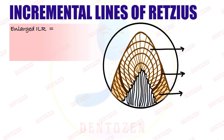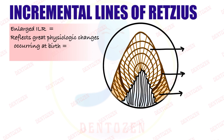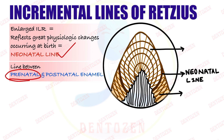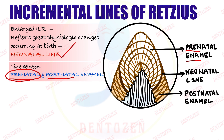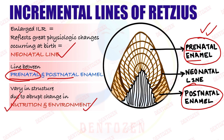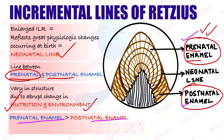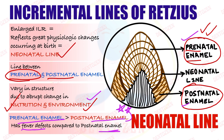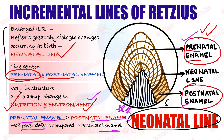Another enlarged incremental line is the neonatal line, seen when there is a great physiological change at birth. Some enamel is formed before birth (prenatal) and some after birth (postnatal), so there is a line — the neonatal line — present between prenatal and postnatal enamel. Prenatal enamel is better because it forms in the mother's body with controlled environment and good nutrition, resulting in fewer defects compared to postnatal enamel.